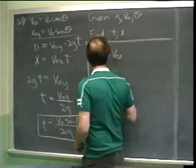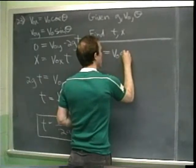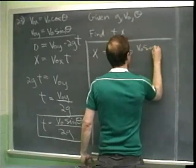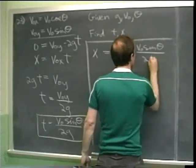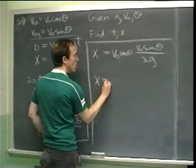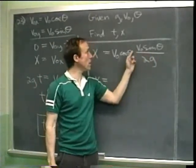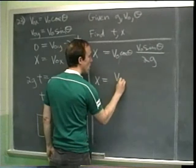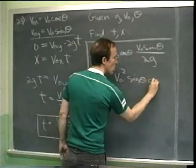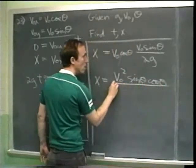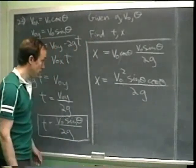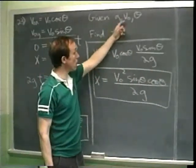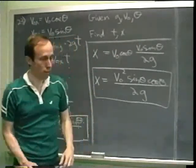Substituting both expressions: x equals v0x times t, with v0x equals v0 cosine theta and t equals v0 sine theta over 2g. So x equals v0 cosine theta times v0 sine theta over 2g, which gives x equals v0 squared times sine theta times cosine theta, all divided by 2g. We've got g, v0, and theta — so we have the answer.